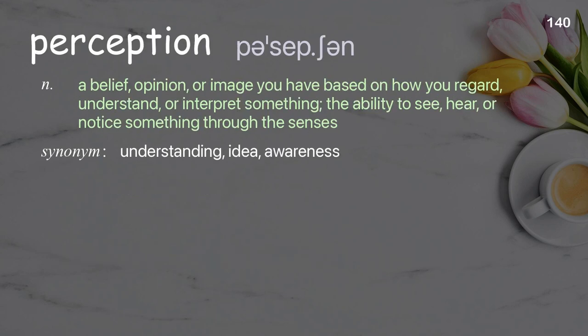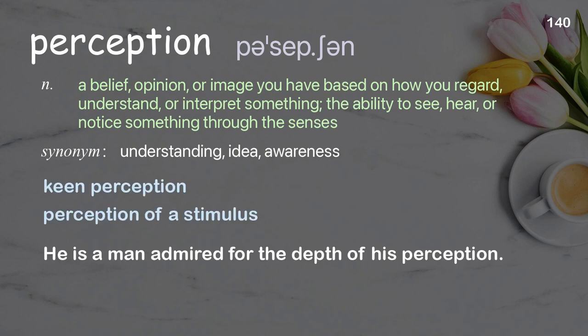Perception: a belief, opinion, or image you have based on how you regard, understand, or interpret something; the ability to see, hear, or notice something through the senses. Examples: keen perception, perception of a stimulus. He is a man admired for the depth of his perception.